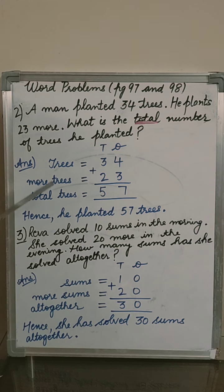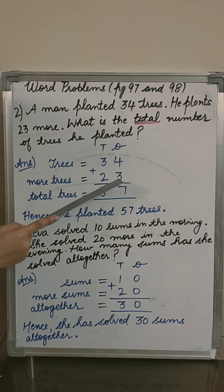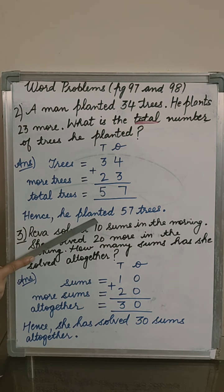Come to the working. Trees 34, more trees 23. Total trees means we have to add plus. It is very important to put the sign. Come to the ones column, 4 plus 3, 7. Come to the tens column, 3 plus 2, it will give you 5. Hence, he planted 57 trees.